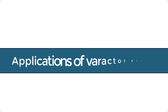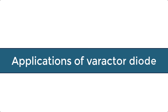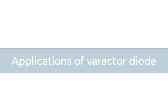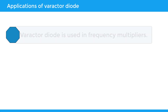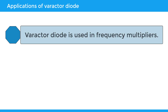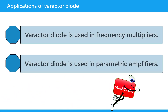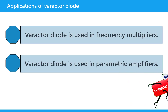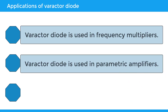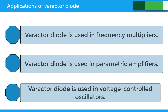Applications of varactor diode: Varactor diode is used in frequency multipliers. They are also used in parametric amplifiers and voltage controlled oscillators.